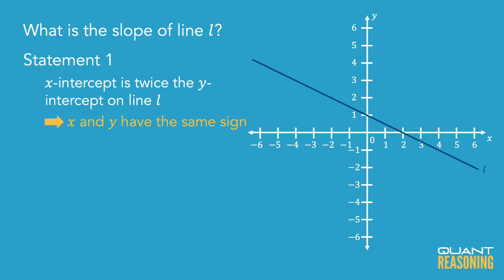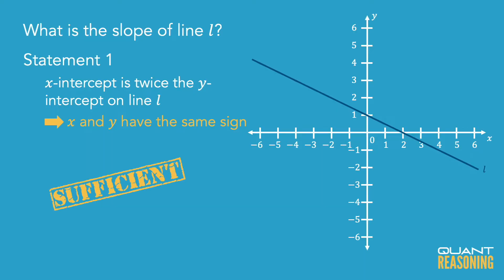So I don't actually have to find what that slope is. I just need to know that the information in statement 1 forces the slope to be just one thing. In other words, statement 1 removes that degree of freedom when it comes to the slope of the line, and therefore statement 1 is sufficient on its own and the correct answer is A.